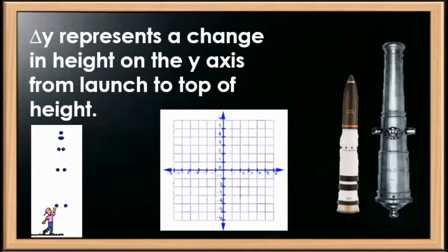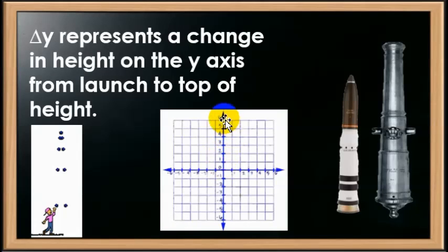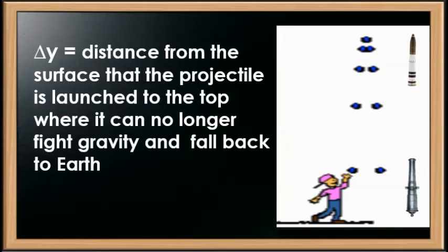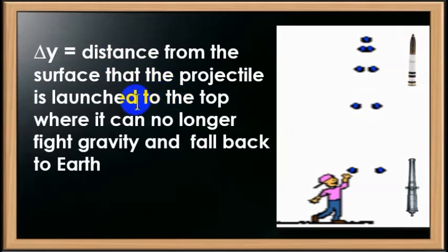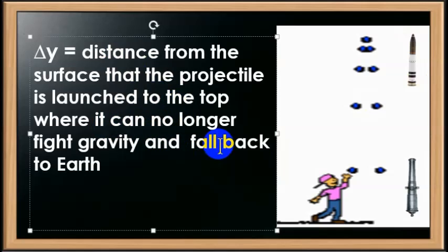Delta Y represents a change in height on the Y-axis — that's vertical height. Delta Y is the distance from the surface where the cannon or projectile is launched to the point where it can no longer fight gravity and falls back to Earth. That's the projectile's path from launch up to the top where it can no longer fight gravity.